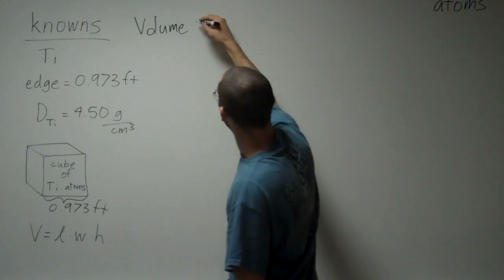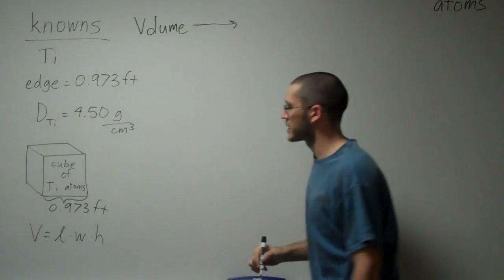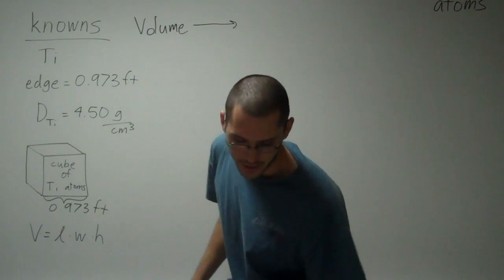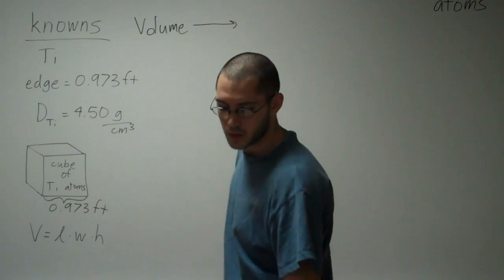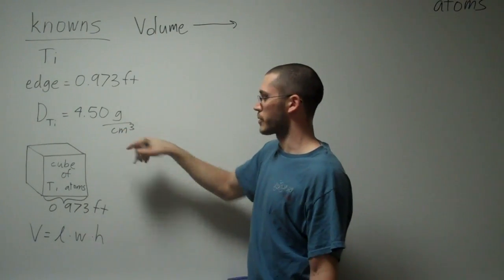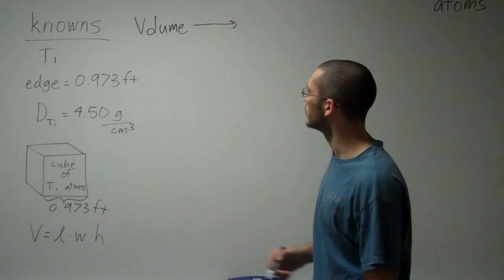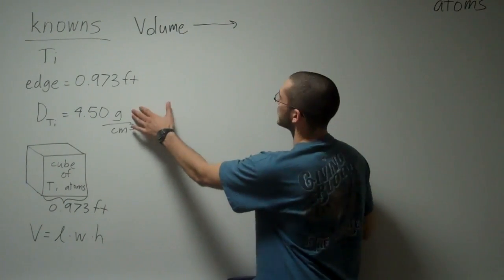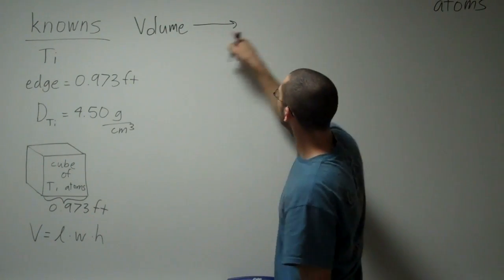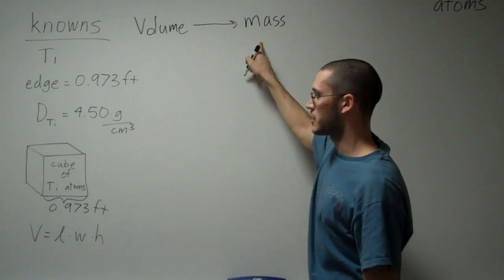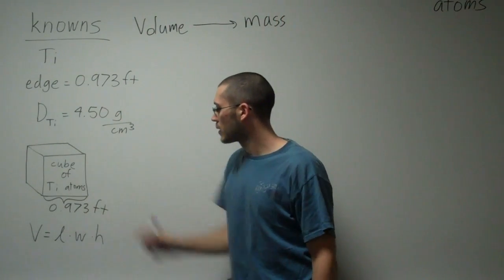I can find out the total volume of it by this equation, the volume of a cube: length times width times height. Because I know one of these edge lengths, and since it's a cube, all these edges are all the same. So it's 0.973 times itself three times.